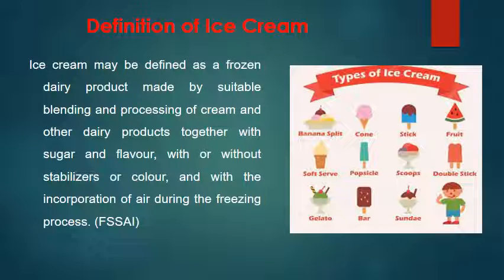Here is the definition of ice cream. Ice cream may be defined as a frozen dairy product made by suitable blending and processing of cream and other dairy products together with sugar and flavor, with or without stabilizers or color, and with the incorporation of air during the freezing process. You can see different kinds of ice cream like cone, soft serve, bar, sundae, scoops, cups, or in bulk.